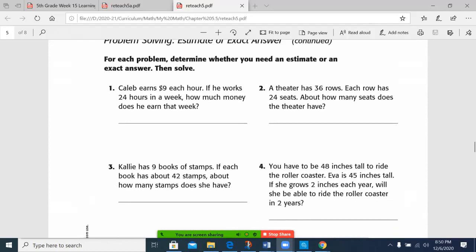So let's do one here. Caleb earns $9 each hour. He works 24 hours in a week. How much money does he earn? Notice it does not say about, so I'm going to need to go ahead and multiply 24 times 9.